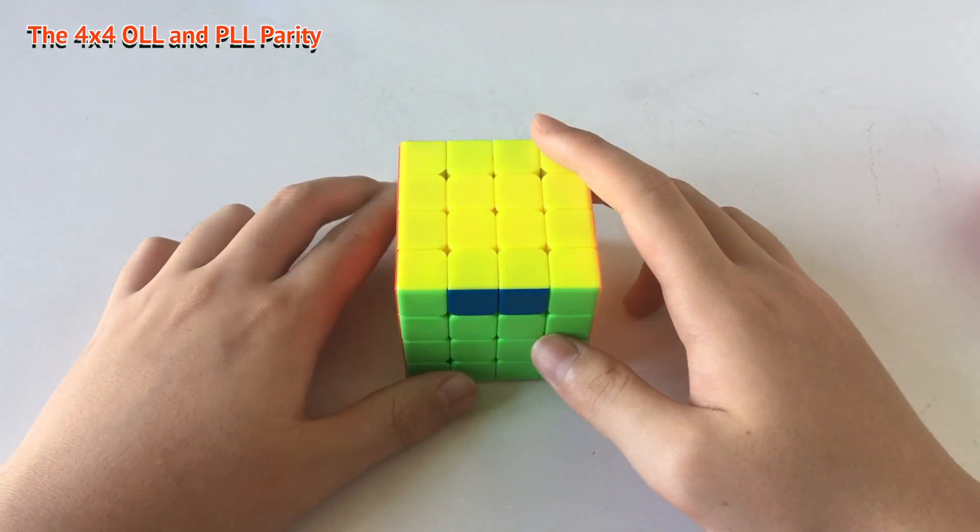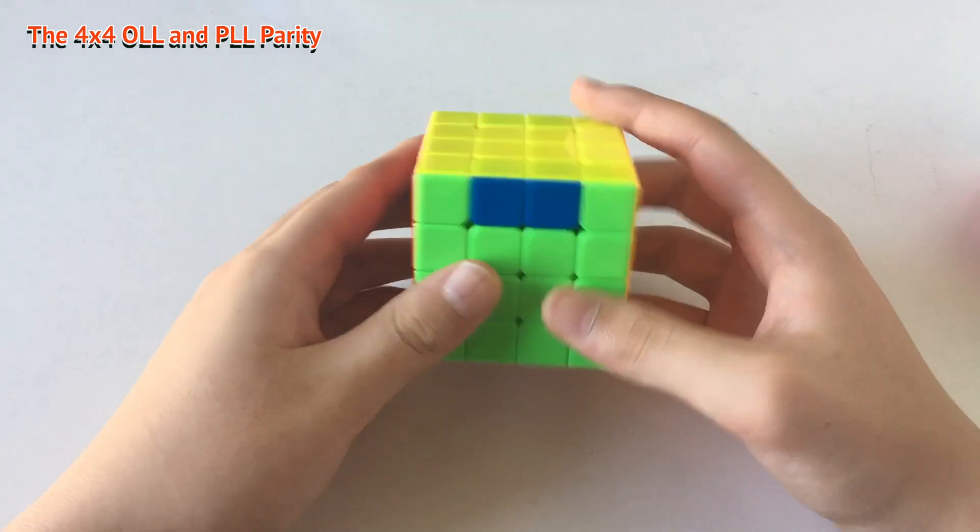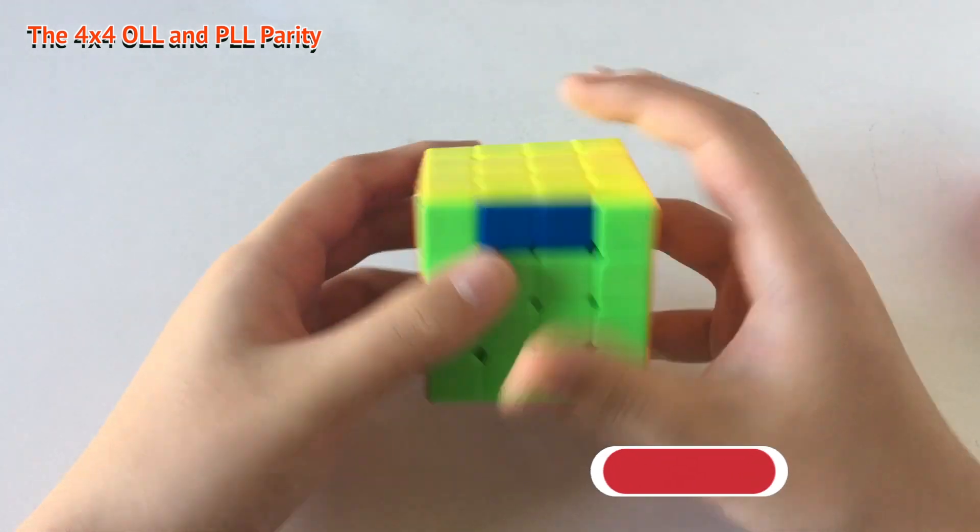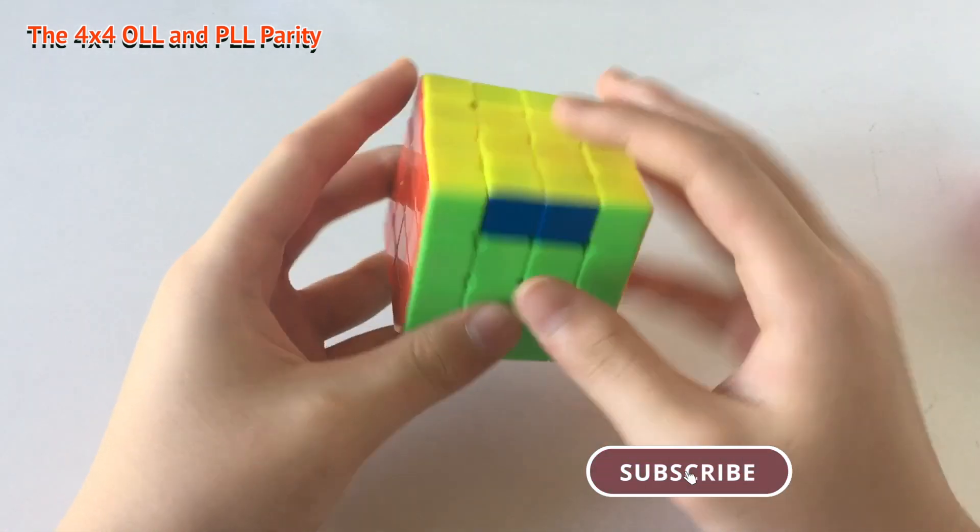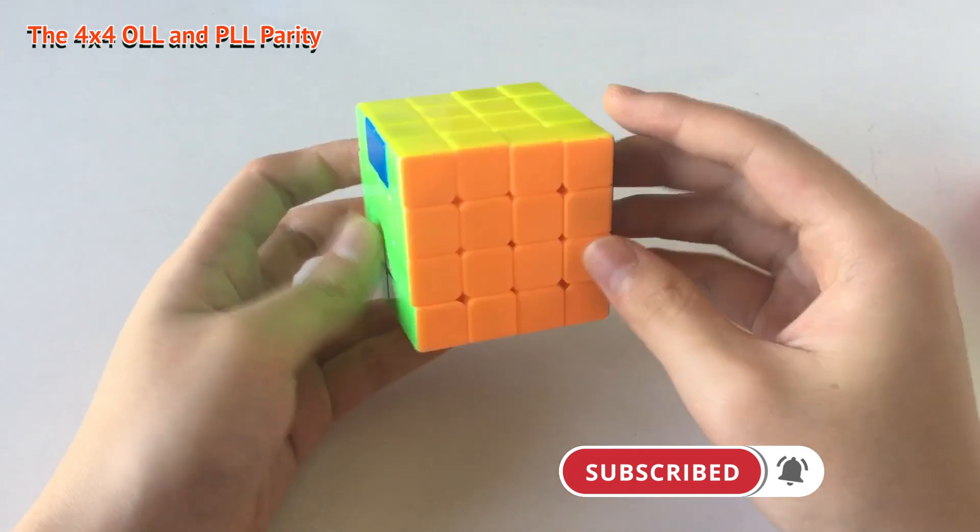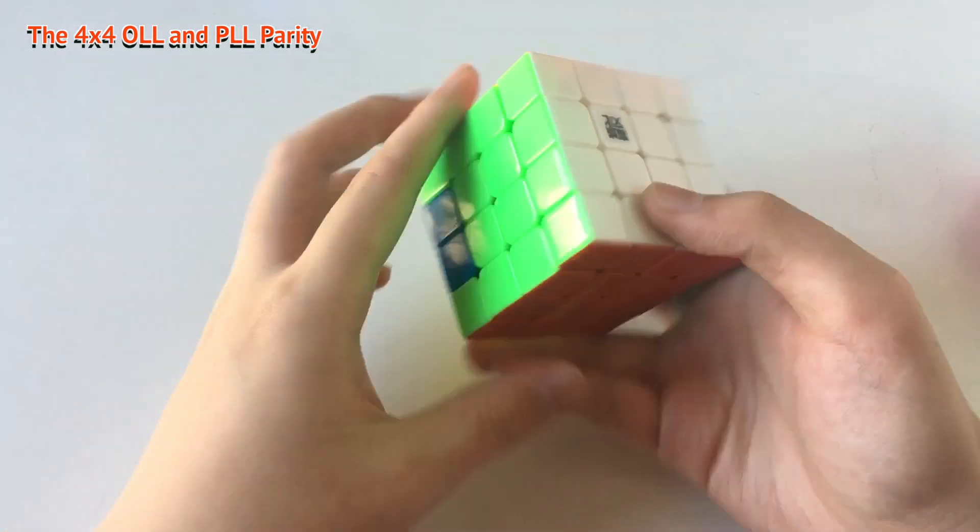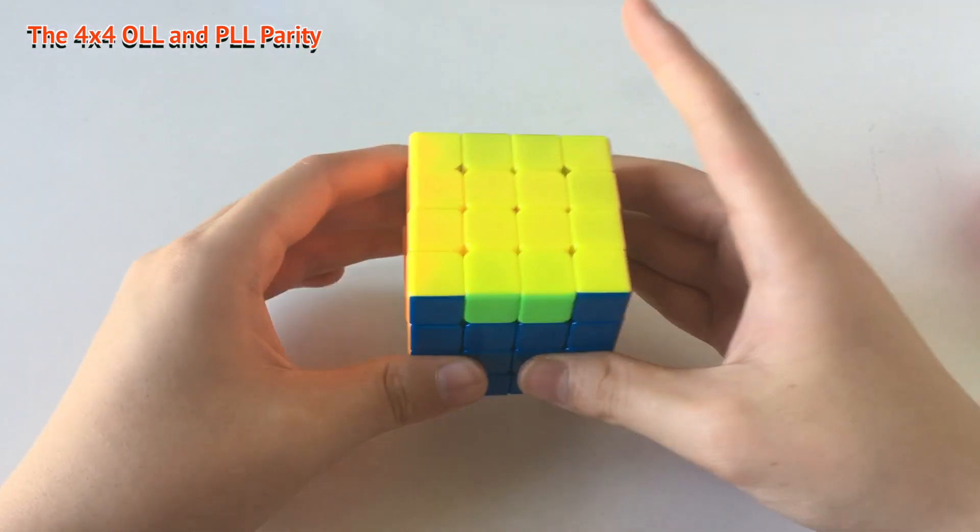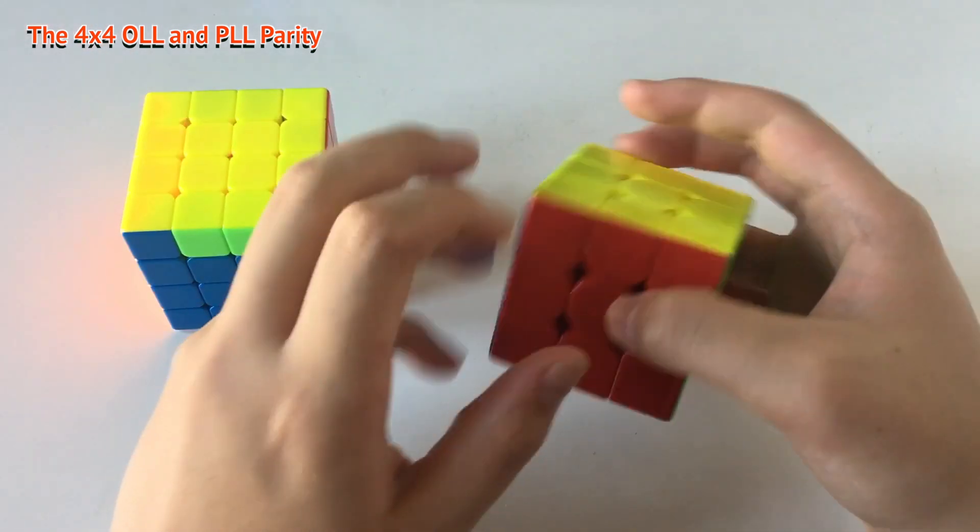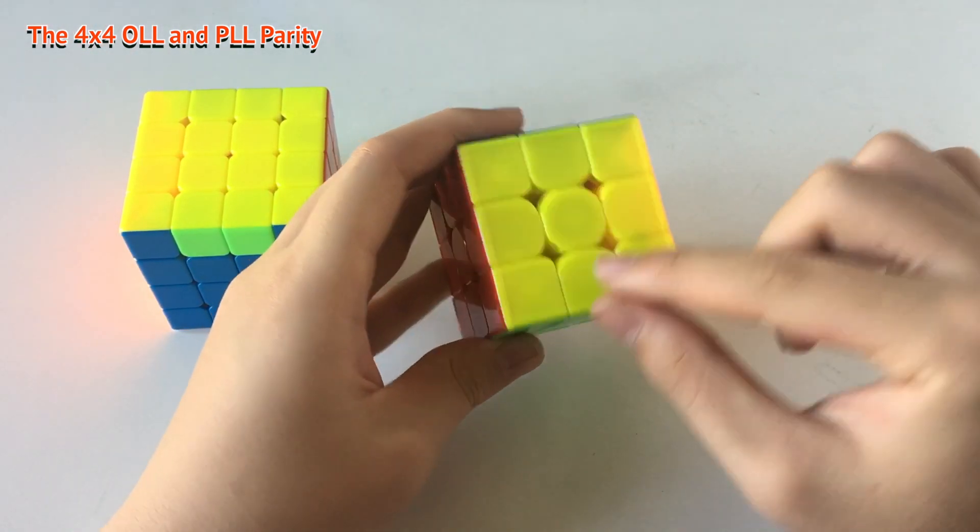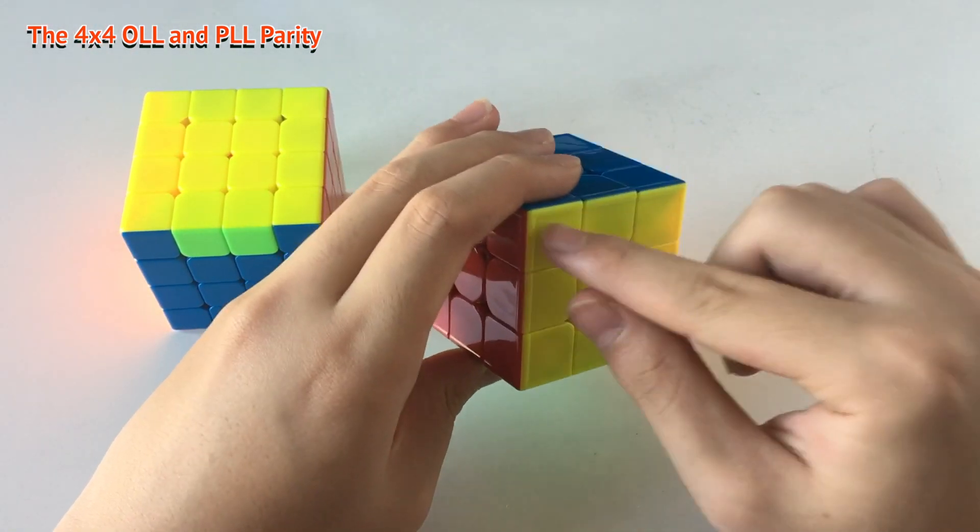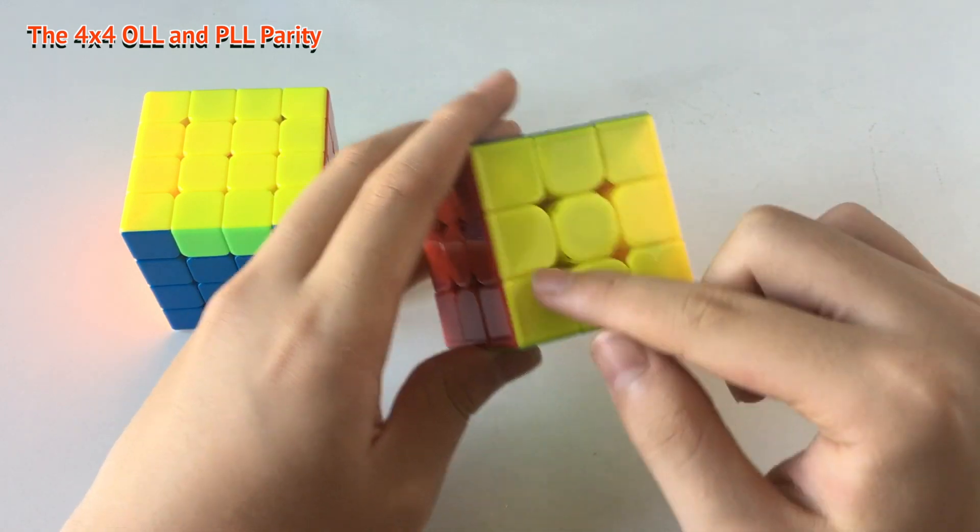So now let's talk about the PLL parity. This is the PLL parity, which means basically this edge is swapped with this edge with all of the others solved. This is literally impossible on the 3x3 to switch this edge and this edge without messing around with the other edges or corners.